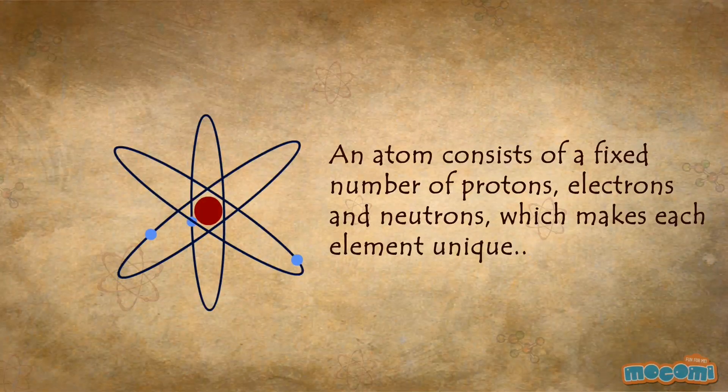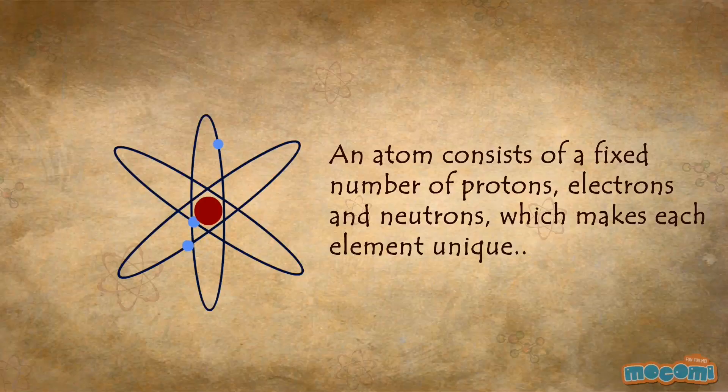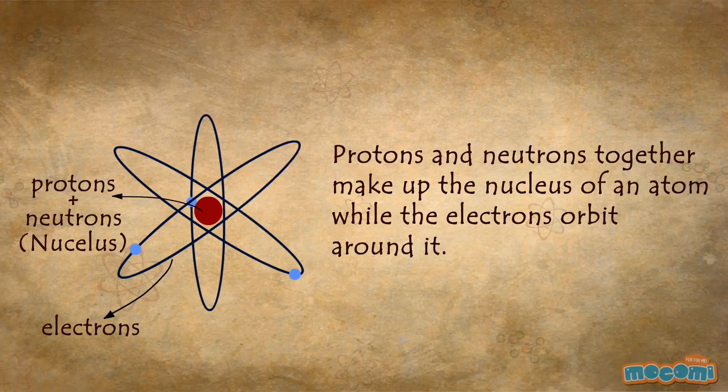An atom consists of a fixed number of protons, electrons and neutrons which makes it unique. Protons and neutrons together make up the nucleus of an atom while the electrons orbit around it.